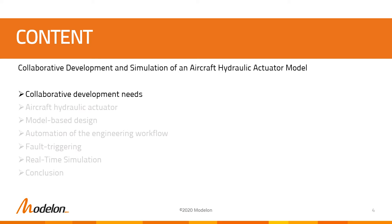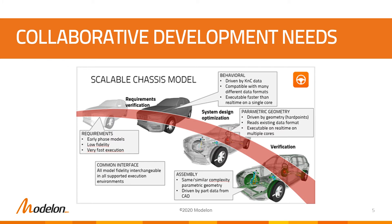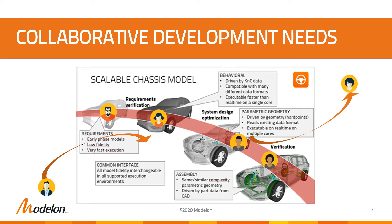Let's now discuss the needs of a collaborative development. Typical development cycles include several steps that are usually implemented by different persons and using different software. In addition, models are provided by externals, for example suppliers, and some are also sent to model consumers, for example a different department in the company. This means that an efficient model development relies on several persons, several fidelities of models, and several tools, which clearly highlights the need for collaborative development.